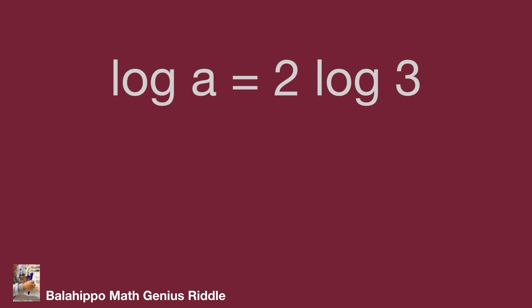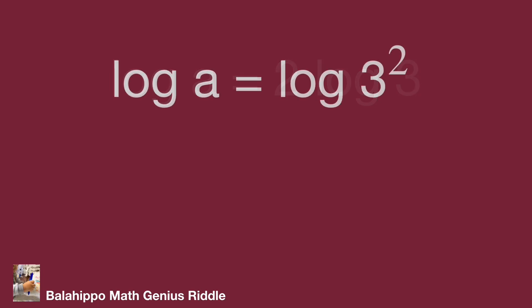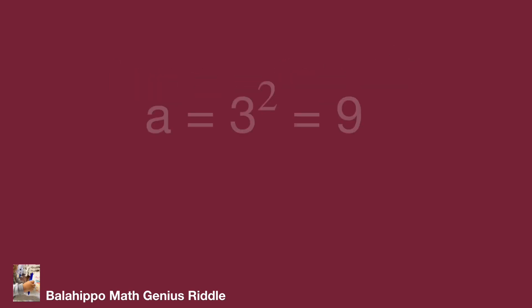In the right side, move 2 into log of 3 to become log 3 squared. So A equal to 3 squared equal to 9.